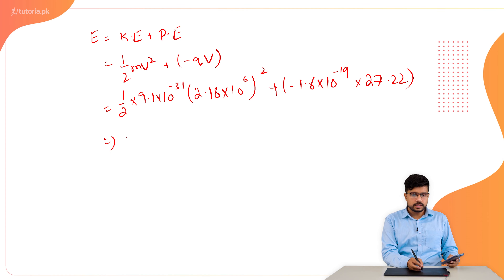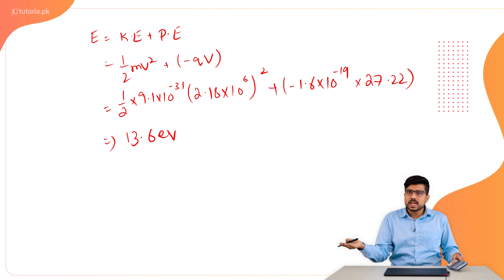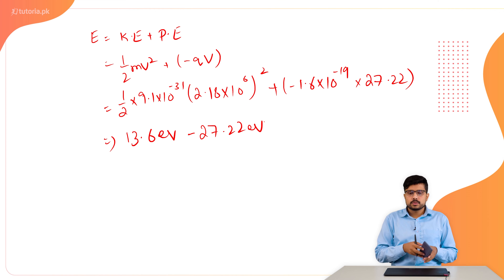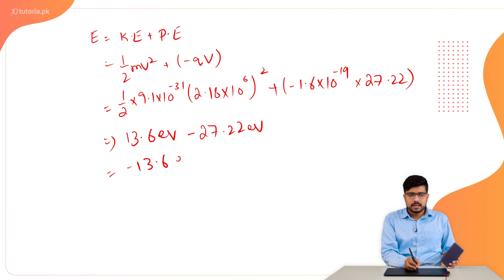We have 13.6 electron volt from the kinetic energy term. Since 1.6 × 10⁻¹⁹ converts to electron volt, the potential energy is minus 27.22 electron volt. So the total energy is minus 13.6 electron volt. This is my total energy.